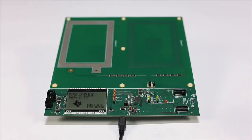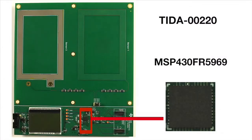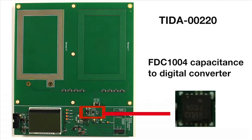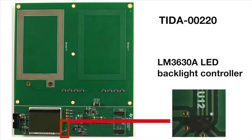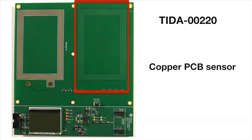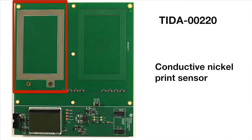Today, we have the reference design board programmed to turn on the LCD screen backlight when a human hand is present. The MSP430FR5969 is located here. The FDC1004 Capacitance to Digital Converter is located here. The TMP112 Local Temperature Sensor is located here. And the LM3630A LED Backlight Controller is located here.